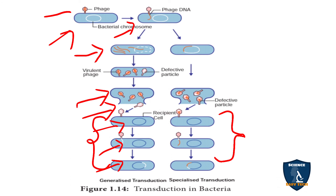So there are three types of sexual reproduction in bacteria: conjugation, transduction, and transformation. Conjugation was given by Lederberg and Tatum. Transformation was given by Griffith. Transduction was given by Zinder and Lederberg. The organism used for conjugation is E. coli; for transformation, Diplococcus pneumoniae; and for transduction, Salmonella.